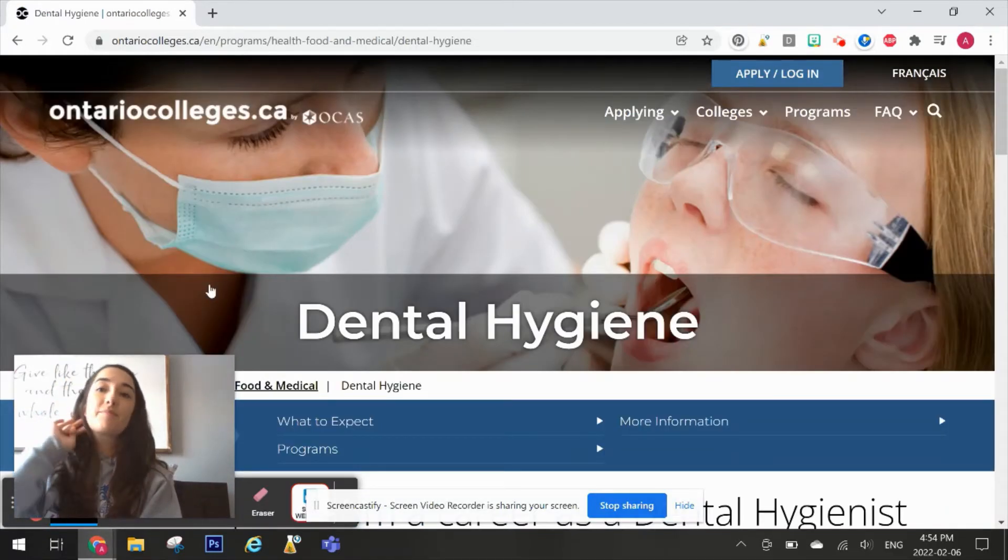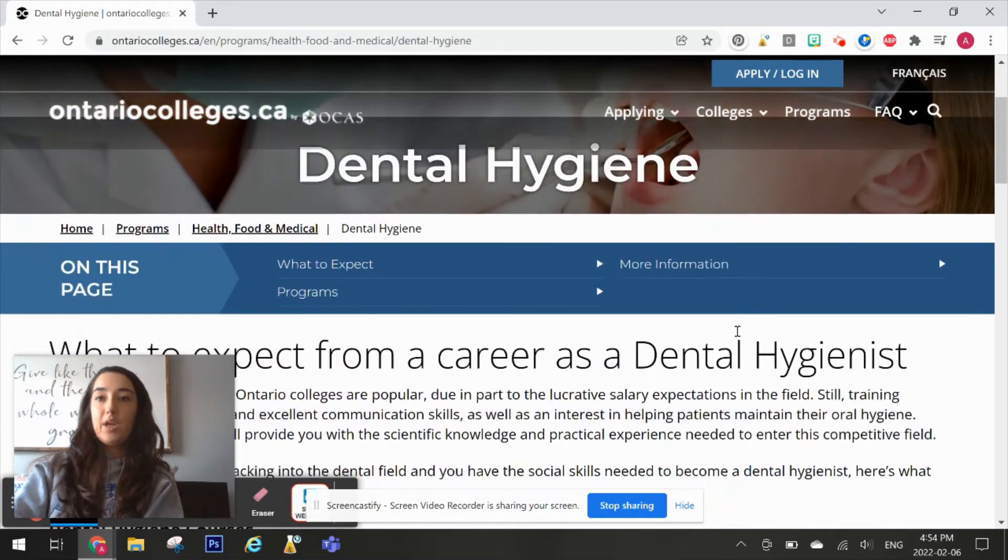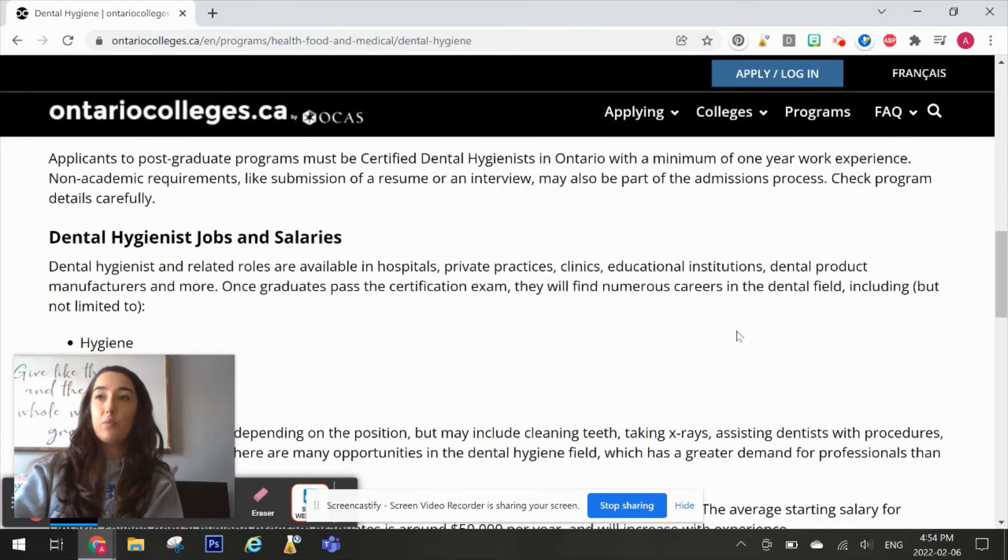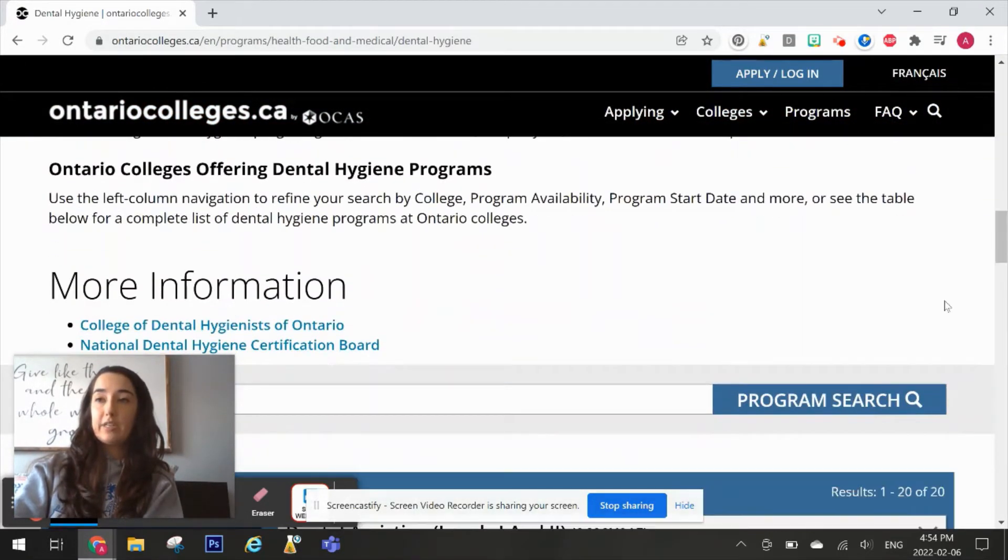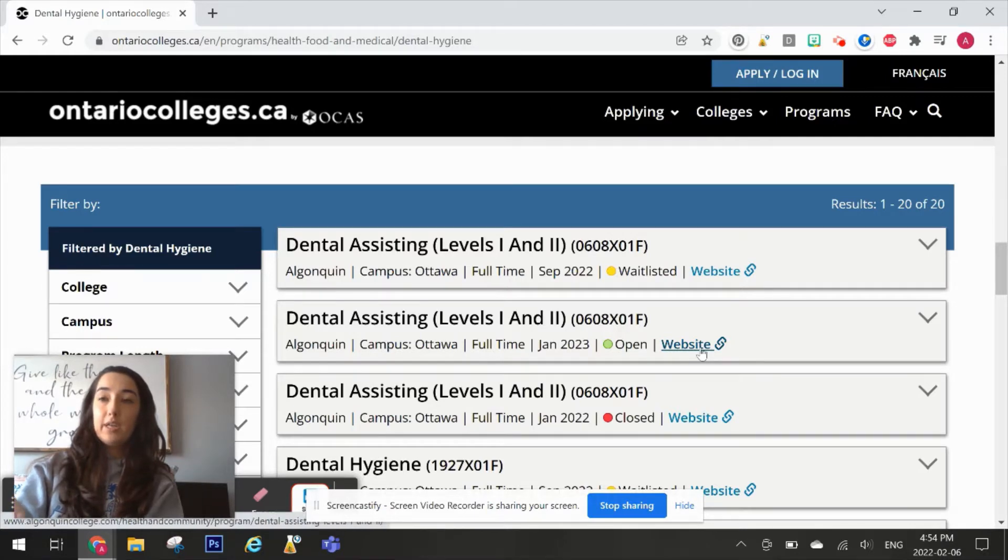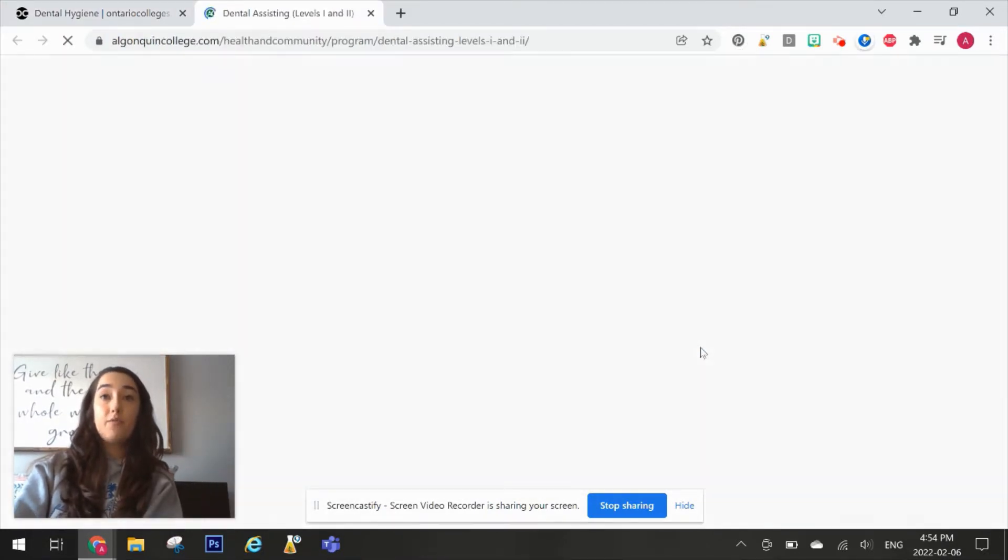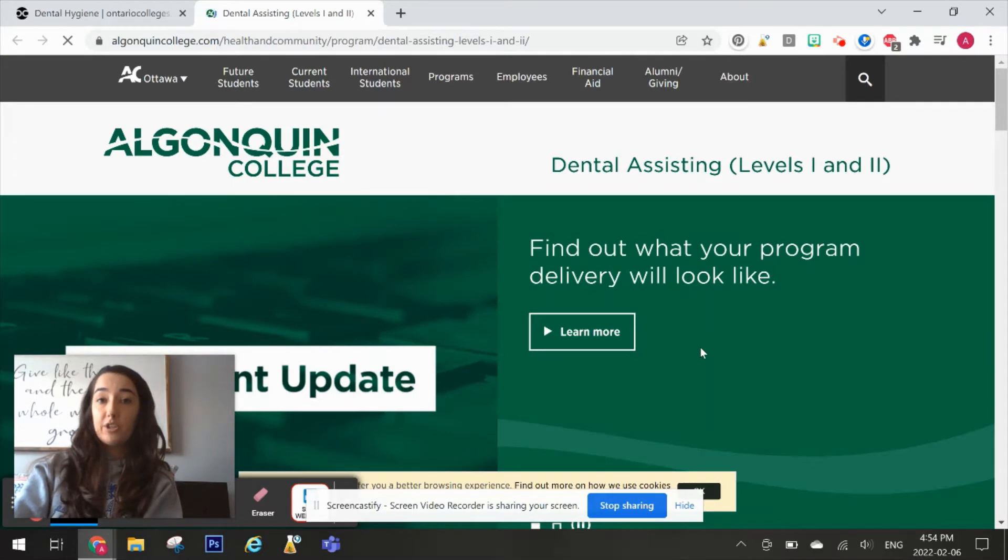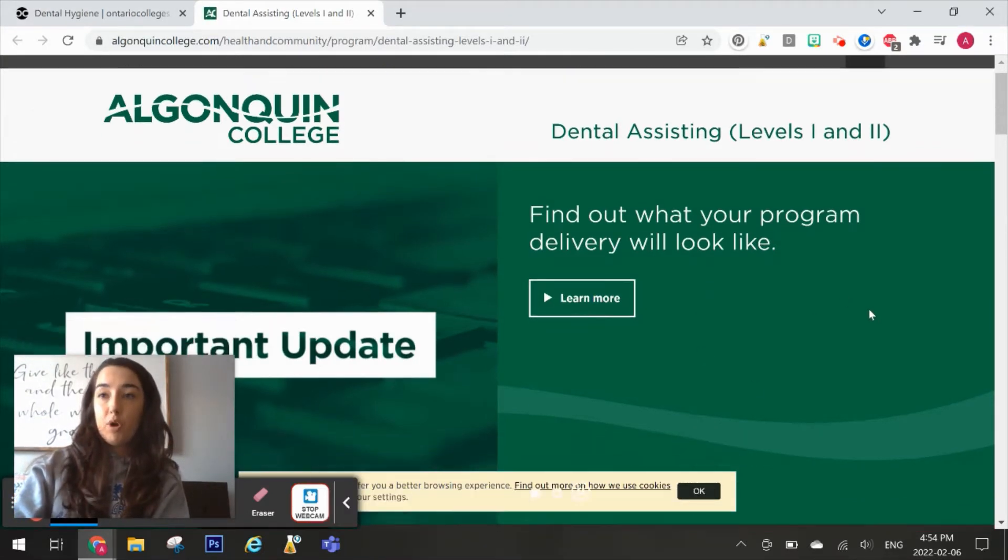Let's check out the health category and I'm going to pick dental hygiene as the program I'm interested in. This tells you all about the different program options that are available and I can actually scroll down and see which Ontario Colleges offer a dental hygiene program. Let's say I'm interested in Algonquin College, which is in Ottawa. If you click on the website button right here, it'll take you to the actual website for this program at Algonquin College.